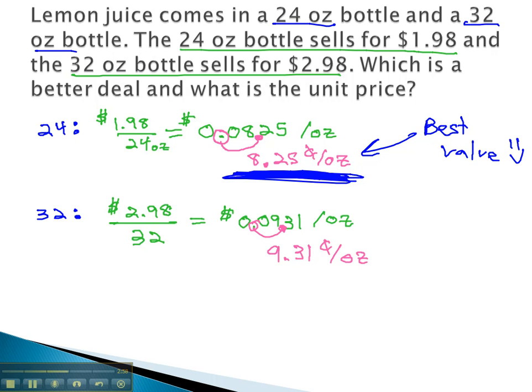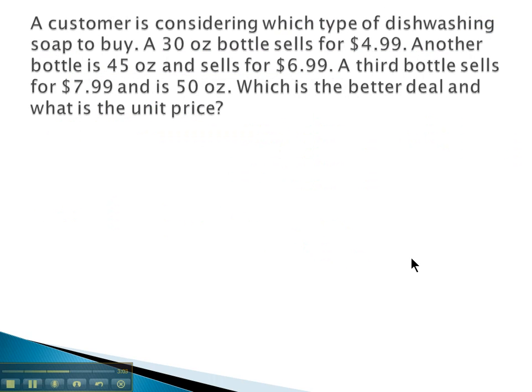Let's try another example where we compare three bottles. Here we're comparing dish soap. First, we have a 30 ounce bottle that sells for $4.99.